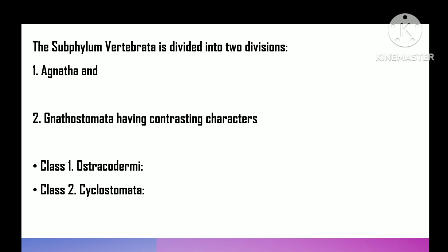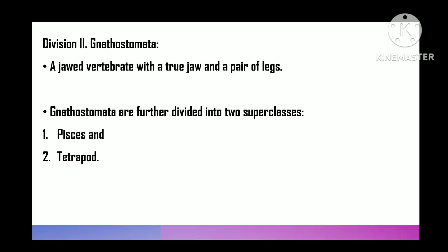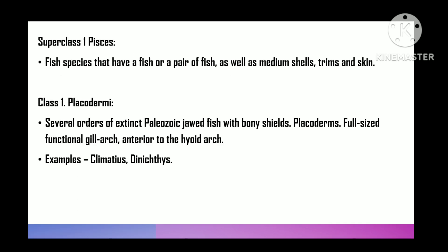Division 2 is Gnathostomata — 'gnathos' means jaw, 'stomata' means mouth — jawed vertebrates having true jaws and paired limbs. Gnathostomata is further divided into two super classes: Pisces and Tetrapoda. All the fishes and fish-like aquatic gnathostomata belong to super class Pisces, whereas all the four-footed terrestrial gnathostomata belong to super class Tetrapoda.